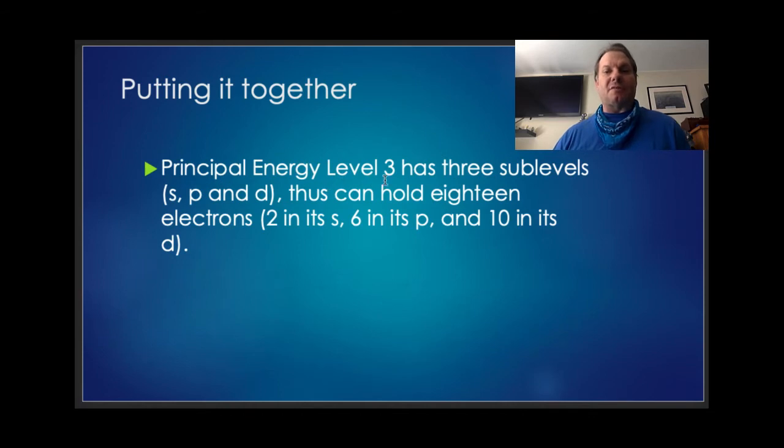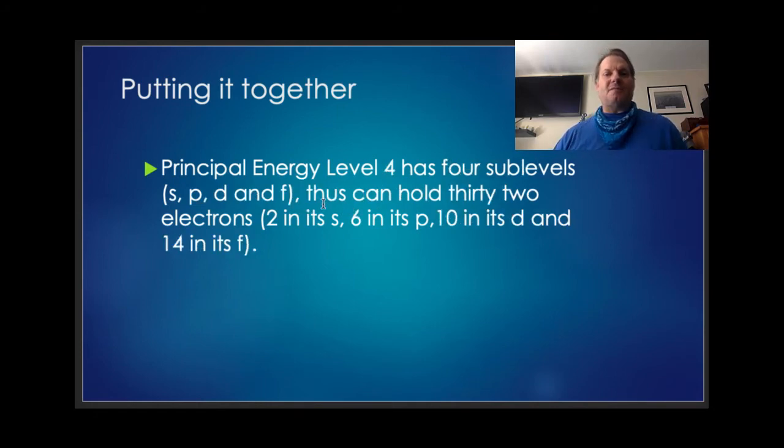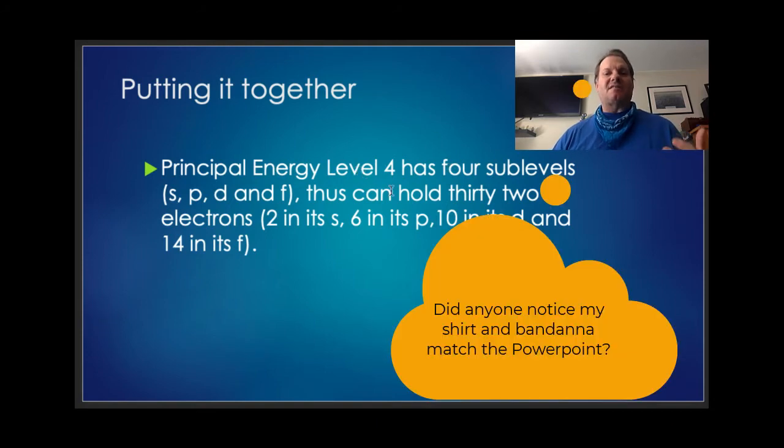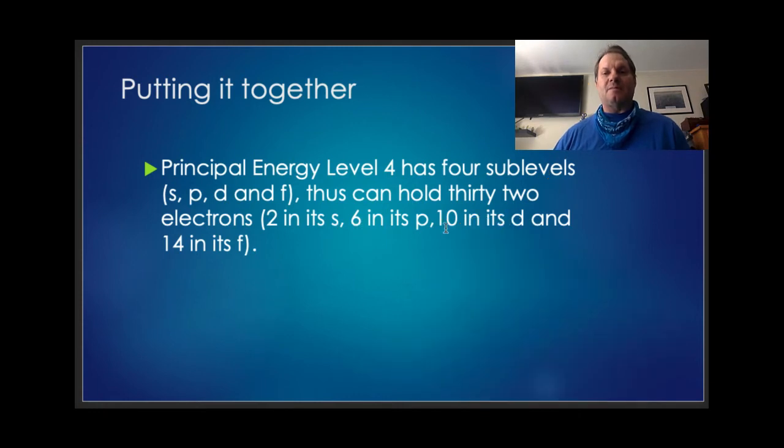Principle energy level three has three different sub-levels. The S, the P, and the D. Thus it can hold 18 electrons. Two in its S, six in its P, and ten in its D. And principle energy level four has four sub-levels. S, P, D, and F. Thus it can hold 32 electrons. Two in the S, six in the P, ten in the D, and fourteen in the F.